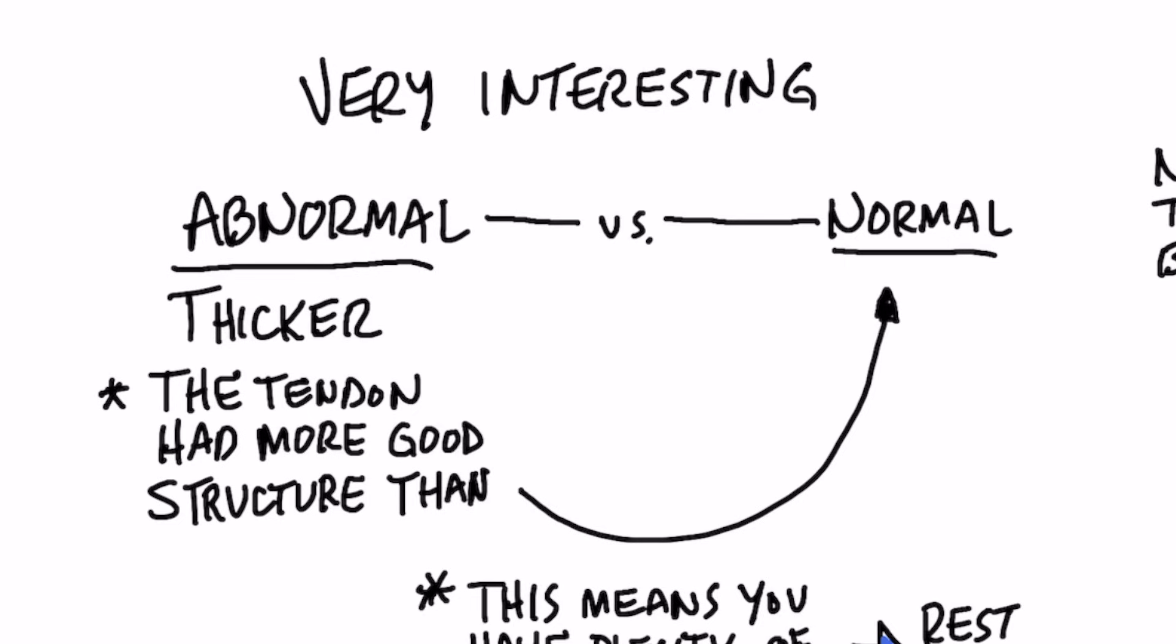Now in the dysfunctional tendon, there was some thickening, but what was very interesting was the abnormal tendon had more normal tissue than the normal tendon. That means that a person would have plenty of good tissue to do load training or resistance type training.